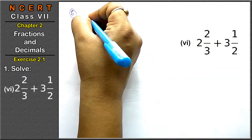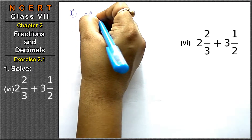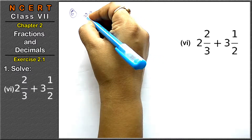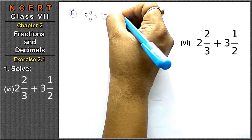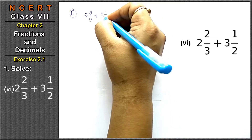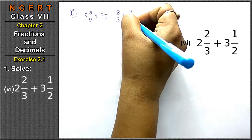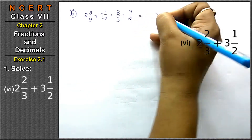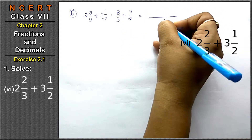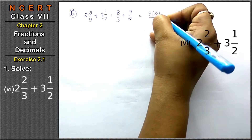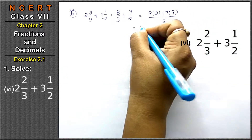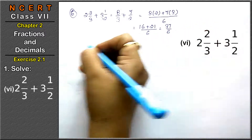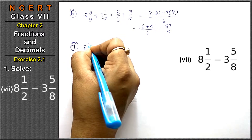The sixth part is 2 and 2 upon 3 plus 3 and 1 upon 2, which are mixed fractions. Convert to improper fractions: 3 times 2 plus 2 gives 8 upon 3, and 2 times 3 plus 1 gives 7 upon 2. LCM of 3 and 2 is 6. Multiply: 8 into 2 plus 7 into 3 is 16 plus 21 upon 6, which equals 37 upon 6 is the answer.